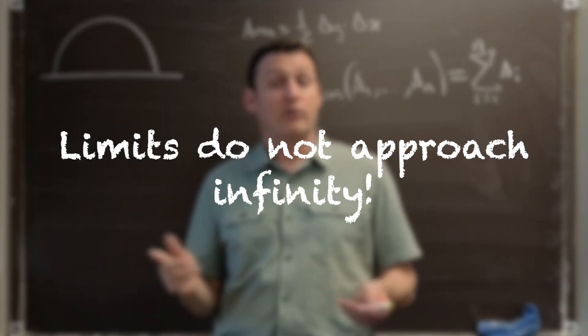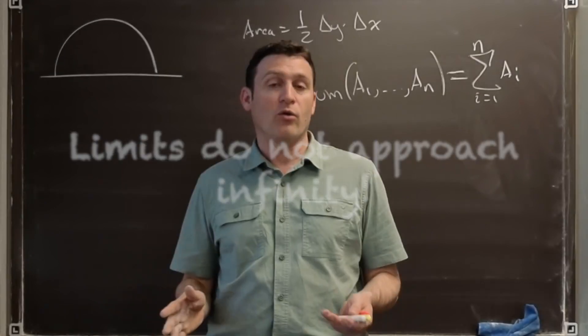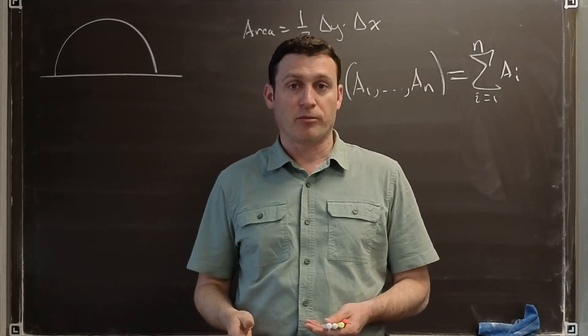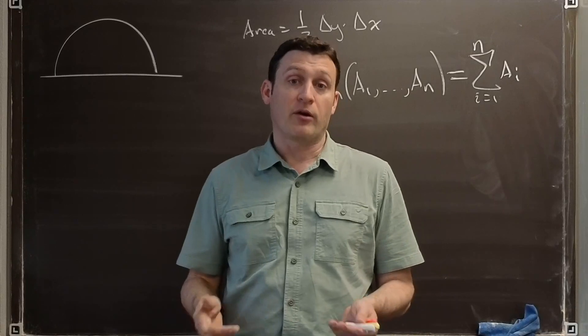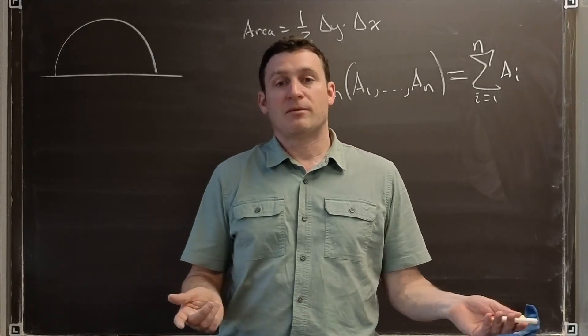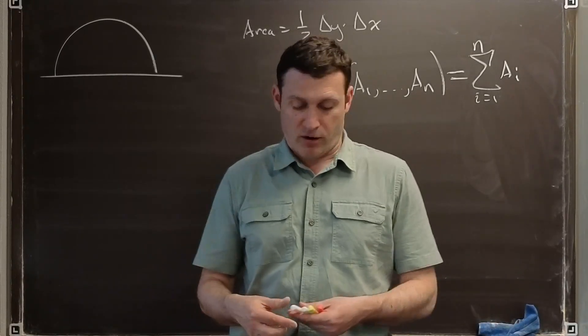Welcome back. What I have here is a semicircle, and you might already know the area for this by some memorized formula. We know the whole circle has area pi r squared, and therefore a semicircle should have area 1/2 pi r squared.